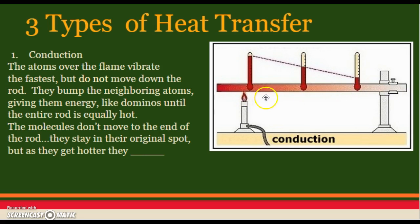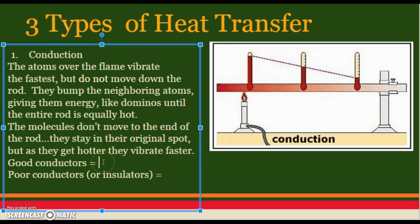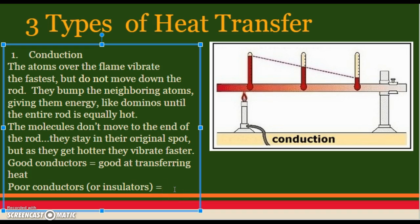Until, if we let this sit here for a while, the entire rod is equally hot. So the molecules don't move to the end of the rod — they stay in their original spot, but as they get hotter they vibrate faster. Objects that transfer heat very well are good conductors, while a poor conductor or insulator is not good at transferring heat. The number one example of a good conductor is, of course, metals. Most metals are very, very good conductors, though some are better than others.